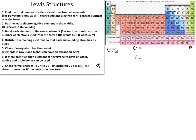Count from the previous noble gas until you reach the element you desire. Counting from helium: lithium, beryllium, boron, and carbon — that's four spaces, representing the four valence electrons that carbon has.